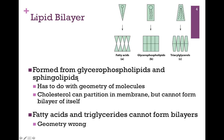So the question is, how do we form this self-sealing lipid bilayer? It's formed from glycerophospholipids and sphingolipids, and this has to do with the geometry of the molecule. Cholesterol can partition in the membrane, but of itself it cannot form a bilayer.